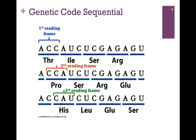That gives us our first reading frame. We might begin at the second nucleotide in our transcript to give us a second reading frame. That would specify a different sequence of codons, and therefore a different sequence of amino acids — in this case, proline, serine, arginine, and glutamate.